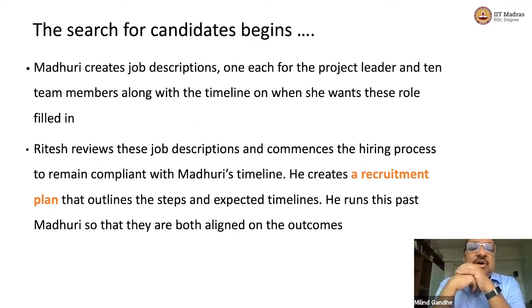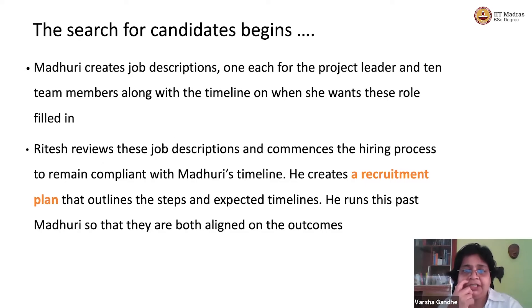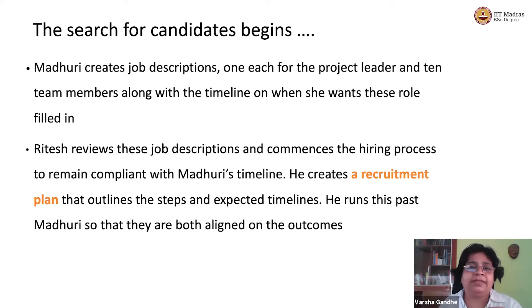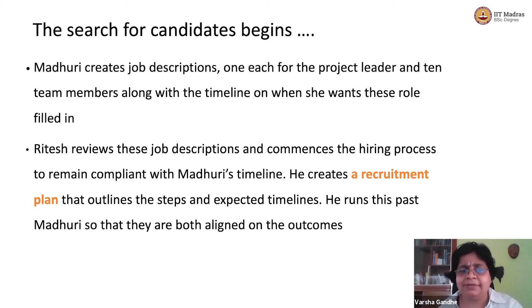Once the JD is there, Madhuri will have to create these JDs for each role she has. For example, the project leader's primary skills and secondary skills will be different from those for her team members. So your application security engineer will have different primary and secondary skills.